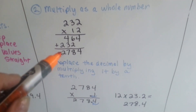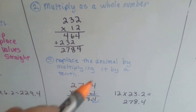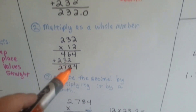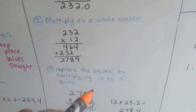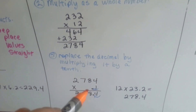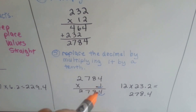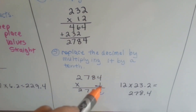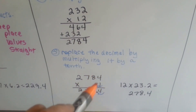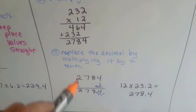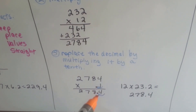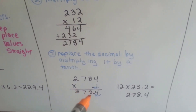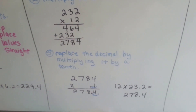Now we have our answer as a whole number. And to put it back as the decimal, because we multiplied it by 10, we need to multiply it by a tenth — so we have 0.1. 1 times 4 is 4, 1 times 8 is 8, 1 times 7 is 7, and 1 times 2 is 2. We hopped over one time in the problem, so we hop over one time in the answer, and our answer is 278 and 4 tenths.